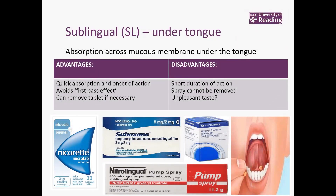When considering the sublingual route, this is under the tongue. You can see in this image that the absorption is under the tongue, which is very vascular with lots of blood vessels and very good blood circulation. The absorption is across the mucous membrane under the tongue, and this bypasses the liver, so it avoids first pass metabolism. Giving medication this way should give 100% bioavailability.